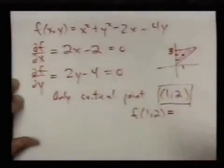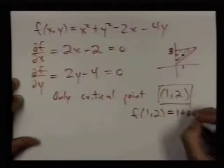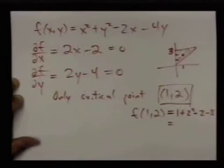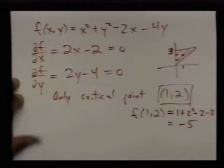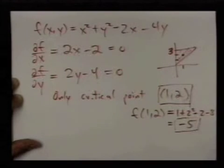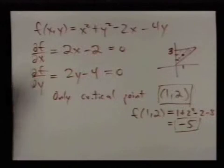If we plug 1, 2 into here, we get 1 plus 2 squared minus 2 minus 8, which comes out to be negative 5. So, we remember that the function has a value negative 5 at 1, 2, and we'll be getting a list of values later on that we'll have to see if we can get lower than this value.